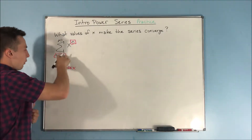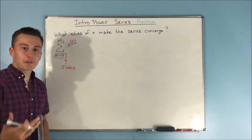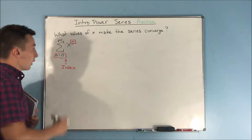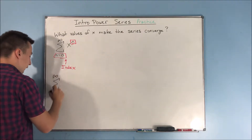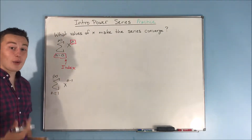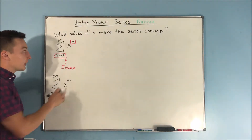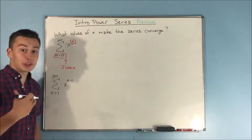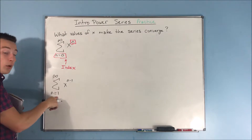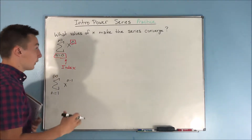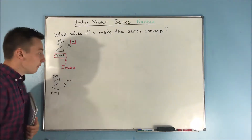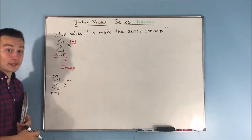Why does this make sense? Well, if you start from n equals 0, that's your first term, and you have x to the 0, which is the beginning of a geometric series. If instead we have the index n equals 1 and x to the n minus 1, our first term is at n equals 1 — but plug in n equals 1 and you still get x to the 0, which is the constant that starts our geometric series. So you can see the trend: if you raise the index by 1, you subtract 1 from every n.